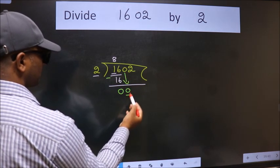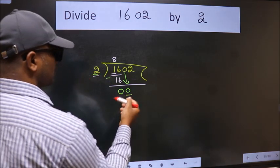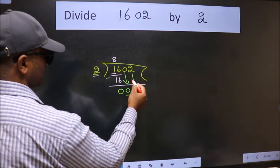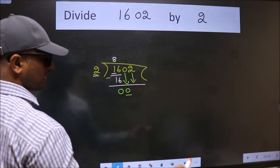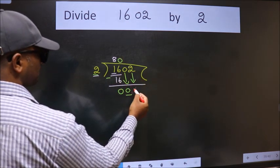Now here we have 0 and here 2. 0 is smaller than 2, so we should bring down the second number. And the rule to bring down second number is: put 0 here. Then only we can bring this number down.